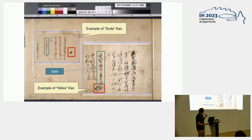Here is an example of these signatures. There are two documents shown: the red part indicates signatures and the blue part indicates the date. This one is Sode, the right-margin Kao located on the large right margin, and this one is the Kao located at the bottom of the date.